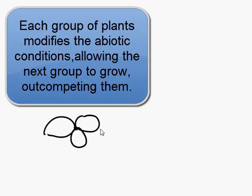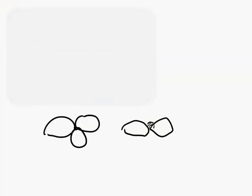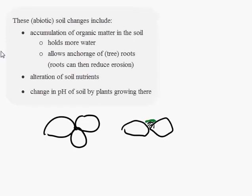We go from our bare rocks — no soil, can't support most plants, just lichens — to rocks with small pockets of soil in between that can support mosses. The mosses have moisture, they grow, they overshadow and kill the lichens. They grow quicker than lichens but still over much, much more time. The soil thickens up and we now have enough soil to support small grasses.